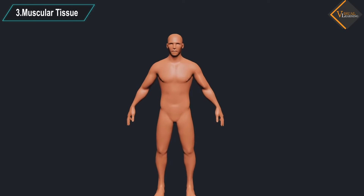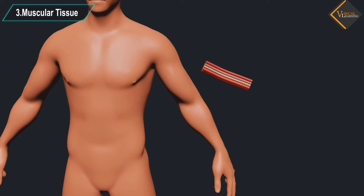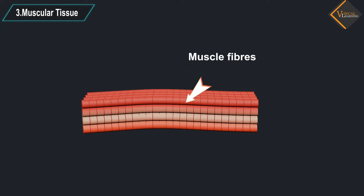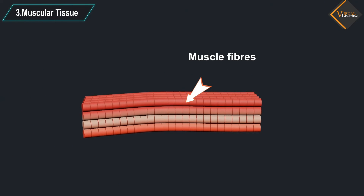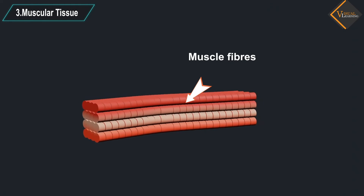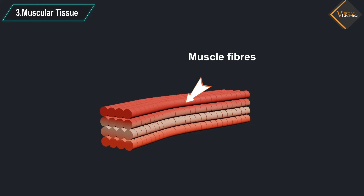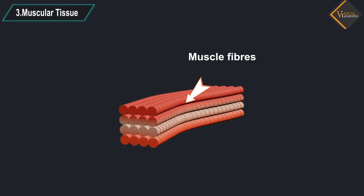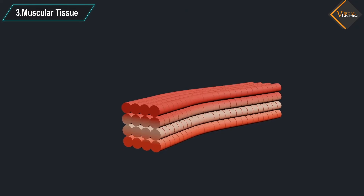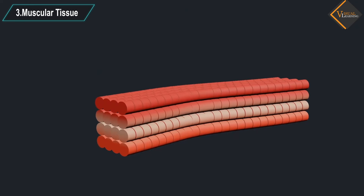Muscular tissue consists of elongated cells also called muscle fibers. This tissue is responsible for movement in our body. These muscles are also called skeletal muscles as they are mostly attached to bones and help in body movement. The cells of this tissue are long, cylindrical, unbranched, and multinucleate.